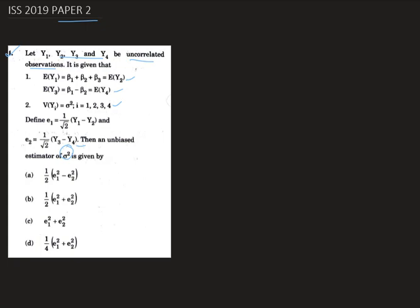We define e1 = (1/√2)(y1 − y2) and e2 = (1/√2)(y3 − y4). We need to find which of the given options is an unbiased estimator of σ².